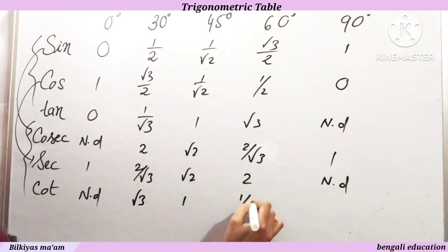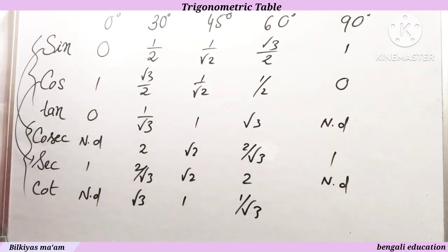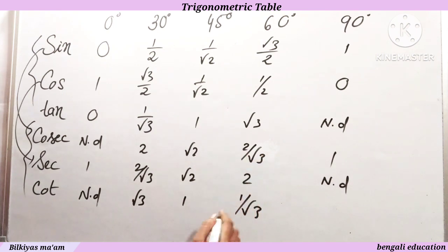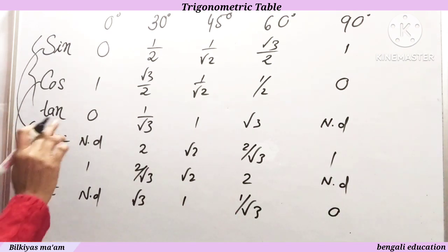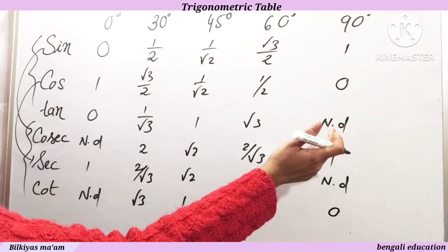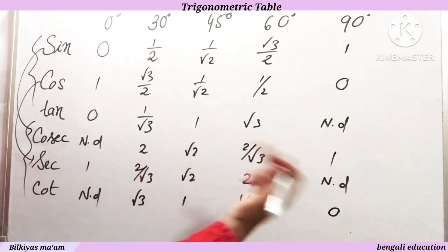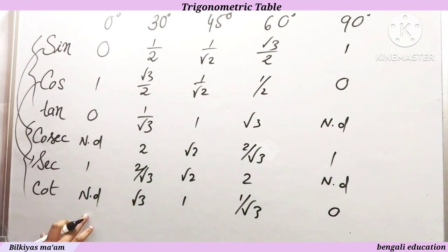Cot values: 1 by 0 is not defined for cot 0. Then we have root 3, 1, 1 by root 3, and 0 by 1 is 0 for cot 90. So the values are not defined, root 3, 1, 1 by root 3, and 0.